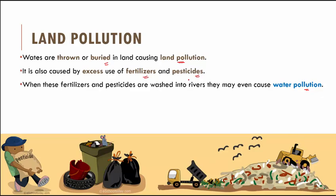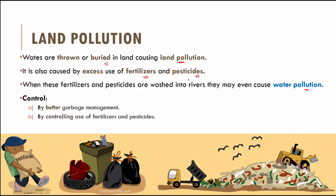How can we control land pollution? Land pollution can be controlled by better garbage management — generating less garbage and segregating whatever garbage we do generate. We can also control land pollution by controlling the use of fertilizers and pesticides, using only the amount that is required.